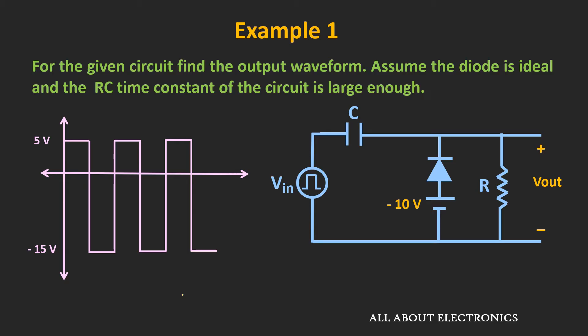In this first example, we have been given a clamper circuit and we have been asked to find the output waveform. Here, it has been given that the diode used in the circuit is an ideal diode and the RC time constant of the circuit is very large. In fact, this large RC time constant is the essential condition for the clamper circuit.